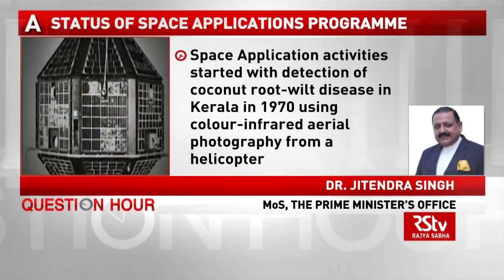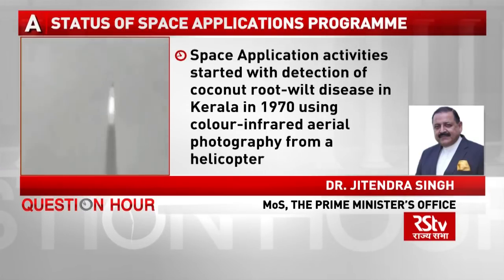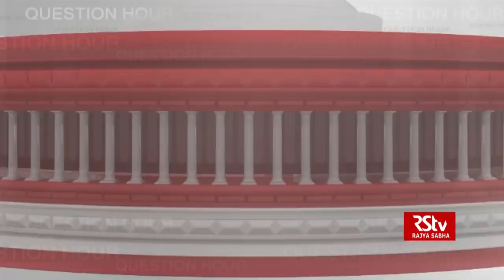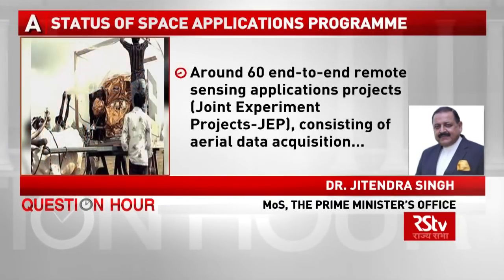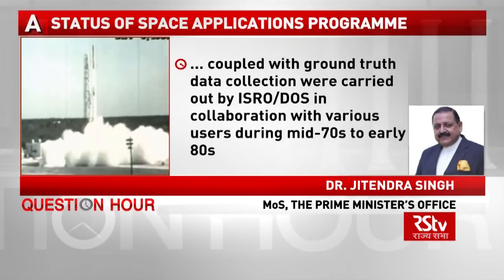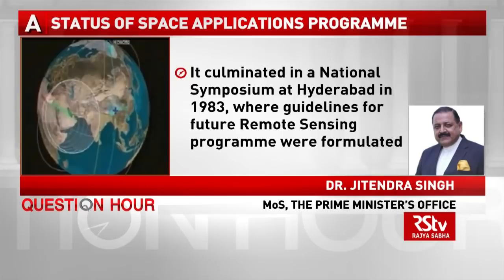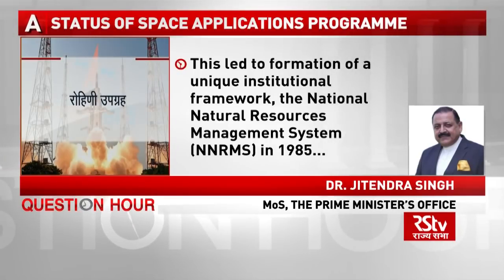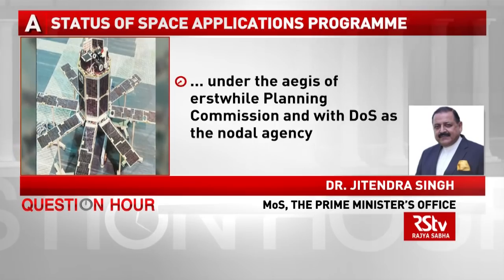Space application activities started with detection of coconut root wilt disease in Kerala in 1970 using colour infrared aerial photography from a helicopter. This was followed by many studies using aerial data and data from the Landsat series of satellites from 1972. Around 60 end-to-end remote sensing application projects — joint experimental projects (JEPs) — were carried out by ISRO in collaboration with various users during the mid-70s to early 80s, culminating in a National Symposium at Hyderabad in 1983, where guidelines for future remote sensing programmes were formulated. This led to the formation of the National Natural Resource Management System (NNRMS) in 1985.